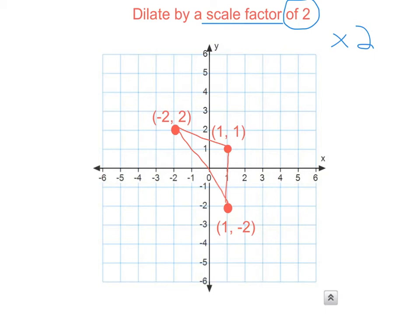So your point at 1, 1, when you multiply by 2, will become 2, 2. Your point at 1, negative 2 will become 2, negative 4.